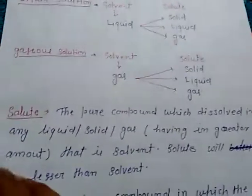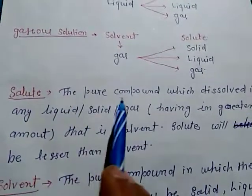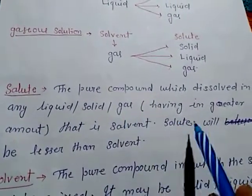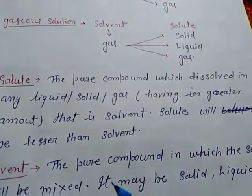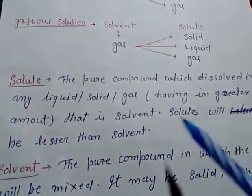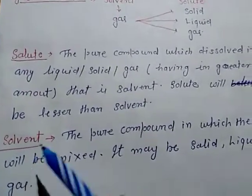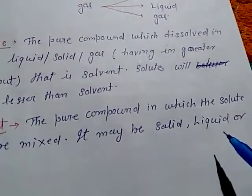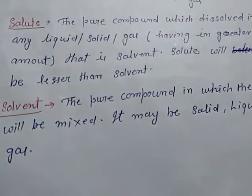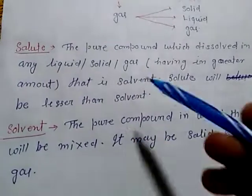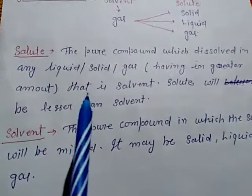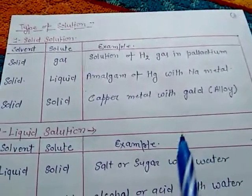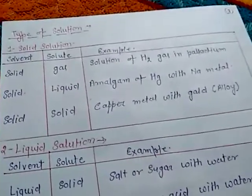Solute is the pure component which dissolves in any liquid, solid, or gas, and is present in lesser amount. The solvent is the pure compound in which the solute is mixed, and is present in greater amount. For example, when salt dissolves in water, salt is the solute and water is the solvent. These nine types of solution are now explained briefly.